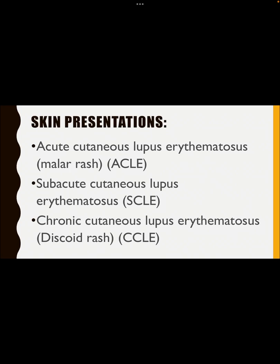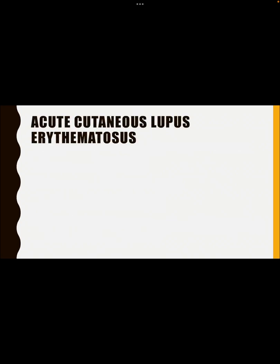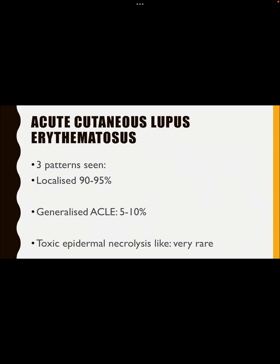Now I am coming to acute cutaneous lupus erythematosus — ACLE. In ACLE, there are usually three patterns. Number one, localized pattern — seen in 90 to 95 percent of ACLE cases. Number two, generalized ACLE — seen in 5 to 10 percent of cases. Number three, a toxic epidermal necrolysis-like lesion, which is very rare. The most common is localized, second is generalized ACLE, and rare is the TEN-like lesion.